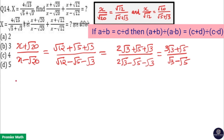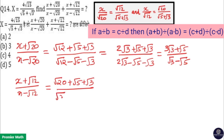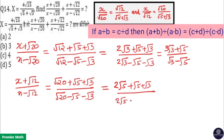The second term is (x + √12)/(x - √12), which equals (√20 + √5 + √3)/(√20 - √5 - √3) by the componendo-dividendo rule. Now √20 = √(4×5) = 2√5. So this becomes (2√5 + √5 + √3)/(2√5 - √5 - √3) = (3√5 + √3)/(√5 - √3).